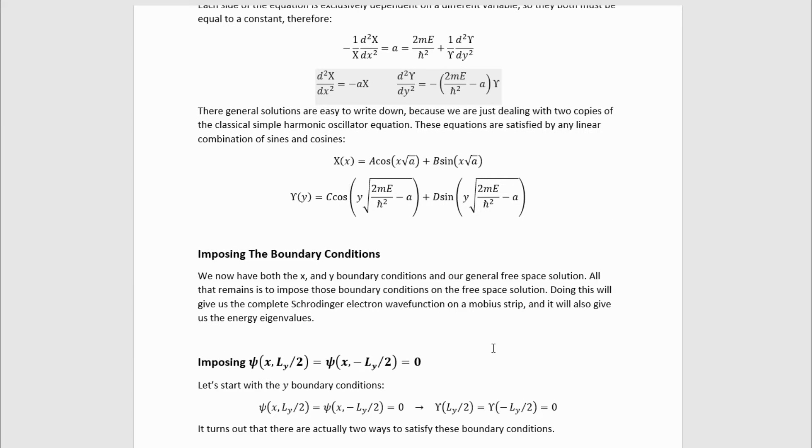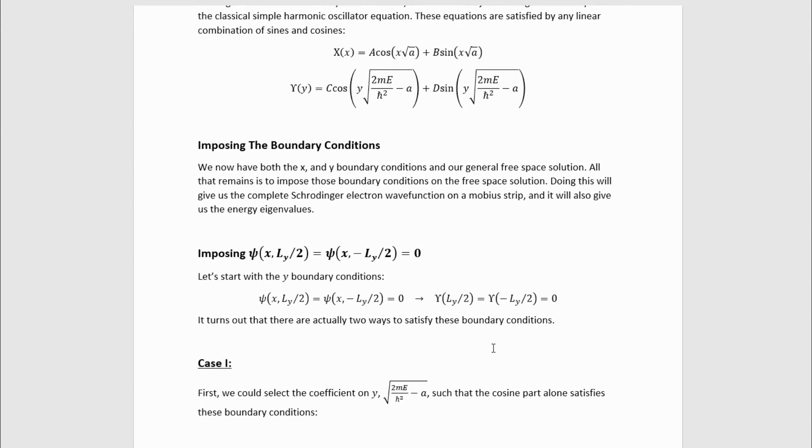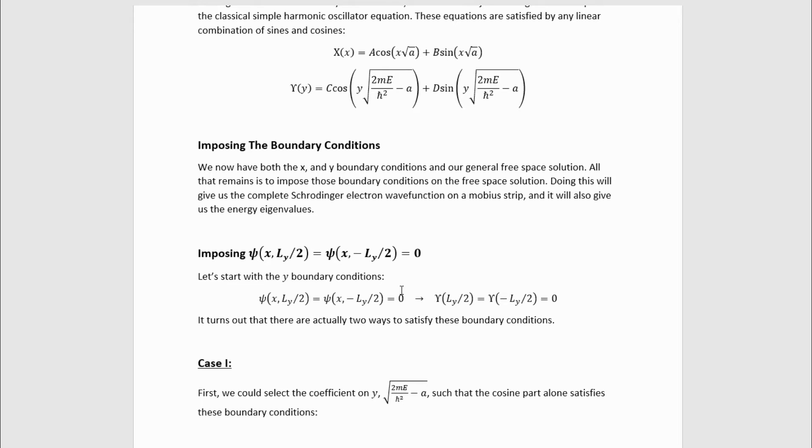Now that we have both the x and the y boundary conditions and our general free space solution, all that remains is to impose these boundary conditions on the free space solution. Doing this will give us the complete Schrodinger equation wave function on a Mobius strip, and it will also give us the energy eigenvalues. The easiest boundary conditions to impose are these ones, because they only involve a change in one variable. It turns out it's also easier to do these first, because having this part figured out when we try and impose the second boundary condition is useful. So this boundary condition, because it only involves a change in one variable, implies this boundary condition for the epsilon factor, which was the purely y-dependent factor.